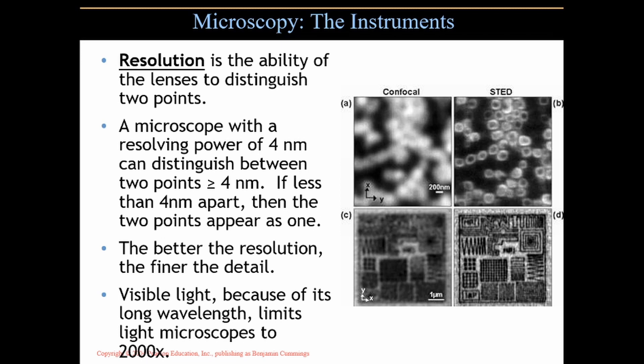You can buy cheap microscopes that claim to magnify 1,200 times — say you found one on sale at a big store for 70 bucks. It can magnify 1,200 times, but its resolution is terrible. So the magnification is useless because when you look through the 1,200x lens, you see nothing but a blur. Good light microscopes like ones you'd see in a lab or hospital cost around $3,000, and their resolving power is excellent. These two side-by-side examples show that confocal resolution is not as good as STED — both showing the same specimen but illustrating the difference in resolving power between the two types.